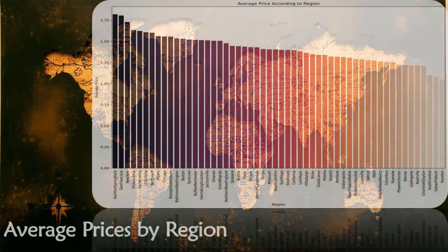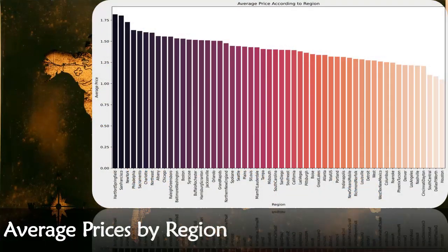The bar plot shows the average prices of avocado in various regions in a descending order. Clearly the bar plot shows Hartford, Springfield, San Francisco, New York are some of the regions in USA with the highest prices of avocado.